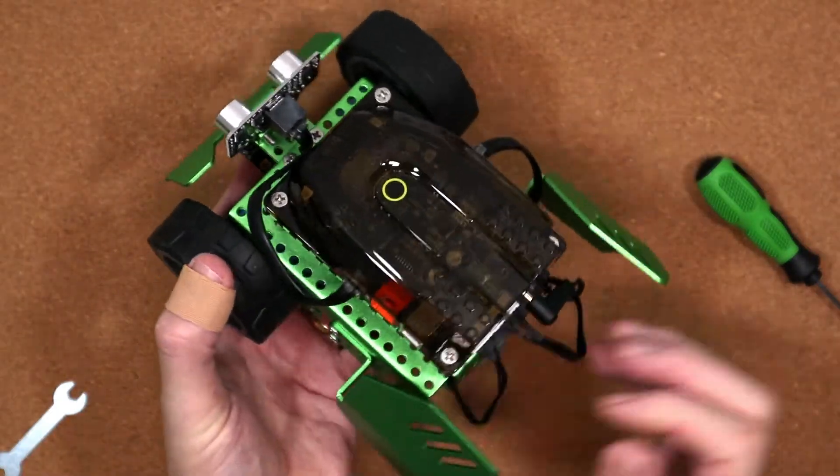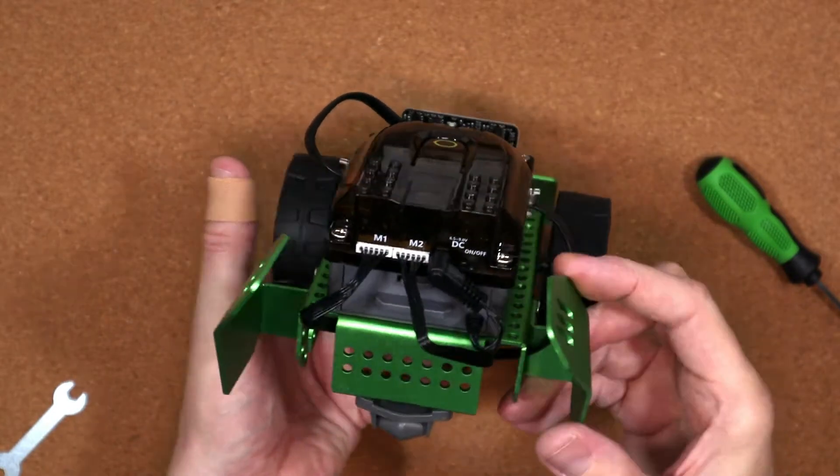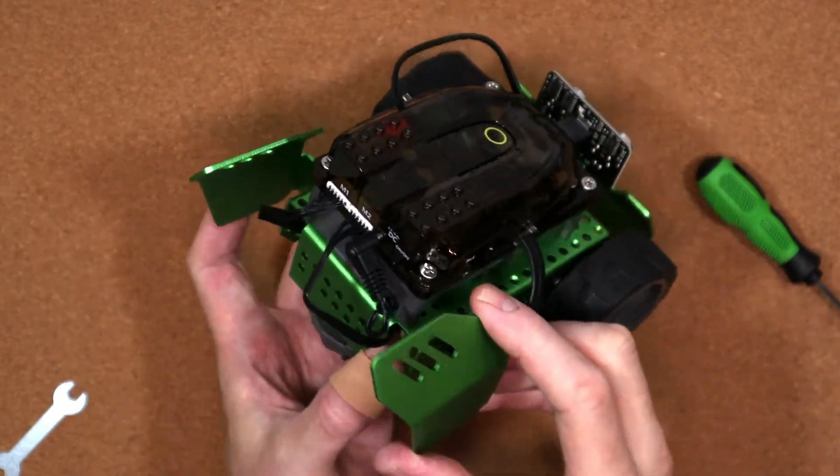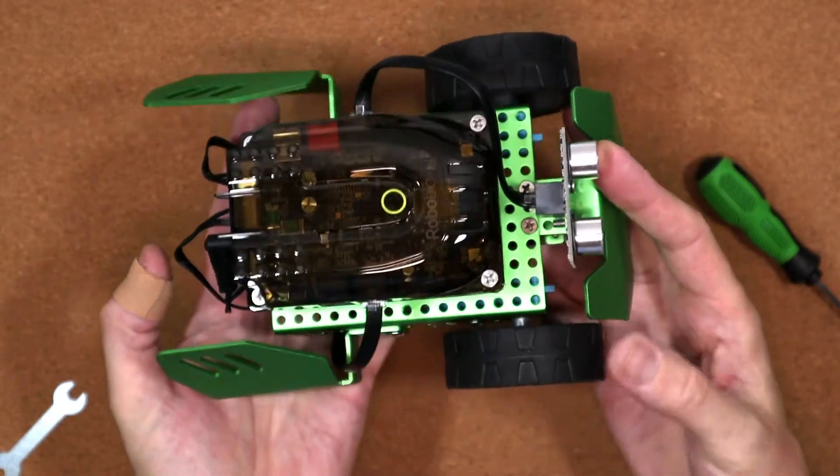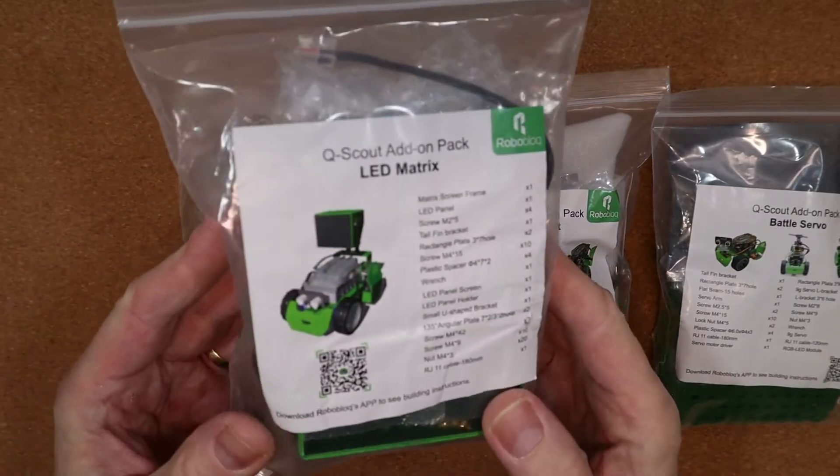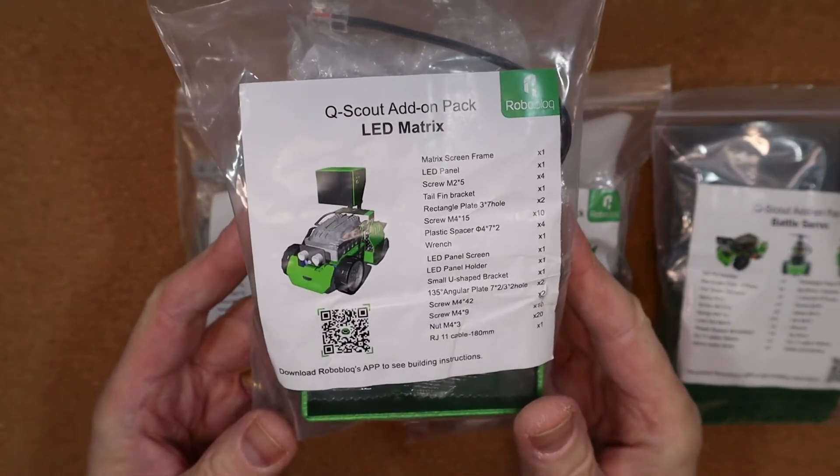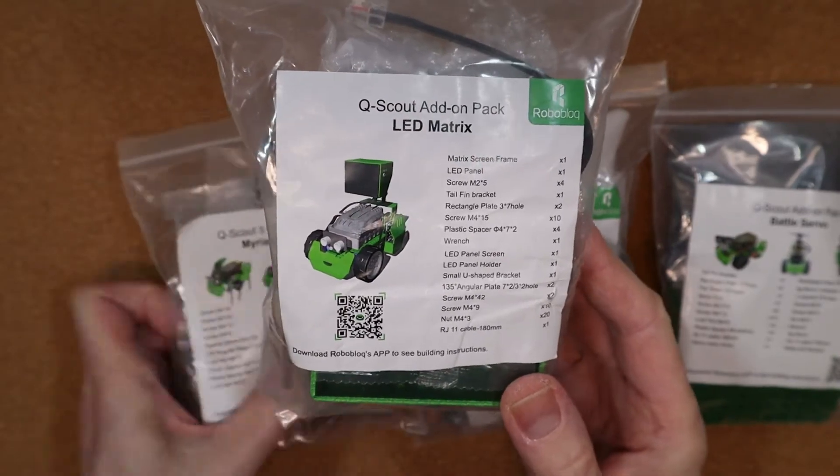Once you're done it should look like this. On the face of it, it looks like Cooper's has more build options since it's a six-in-one robot, although with the addition of these optional expansion packs Q-Scout actually has twice the number of options, a whopping 12.